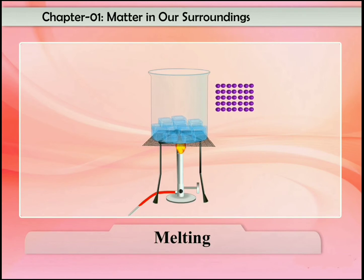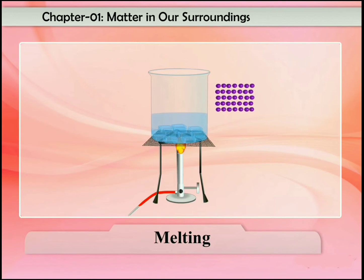At the melting point, the particles of a solid have sufficient kinetic energy to overcome the strong forces of attraction holding them in fixed positions. They break free to form small groups of particles, and this causes the solid to convert into a liquid.